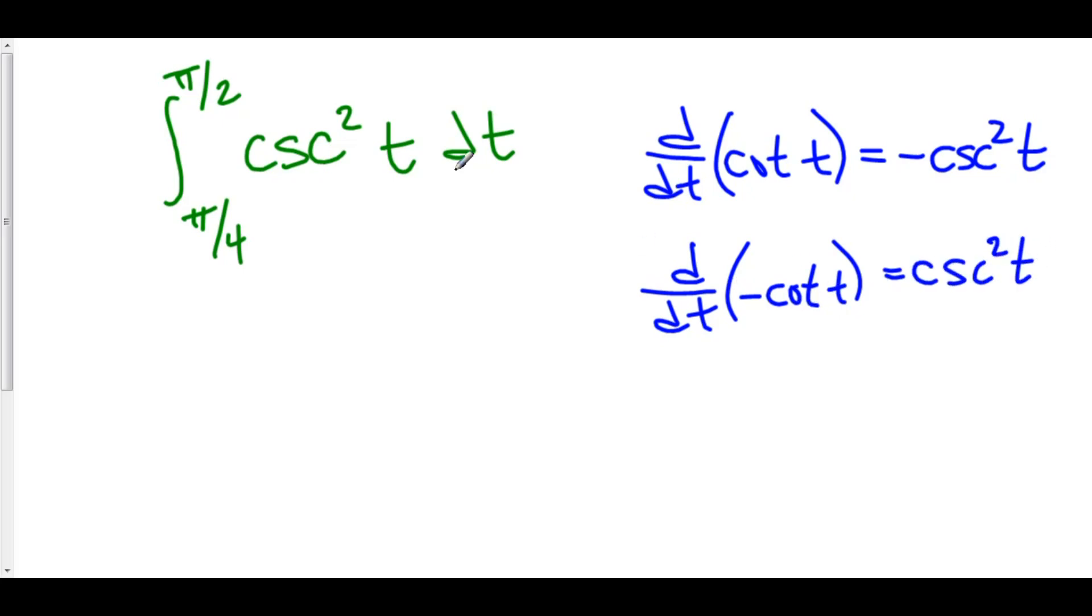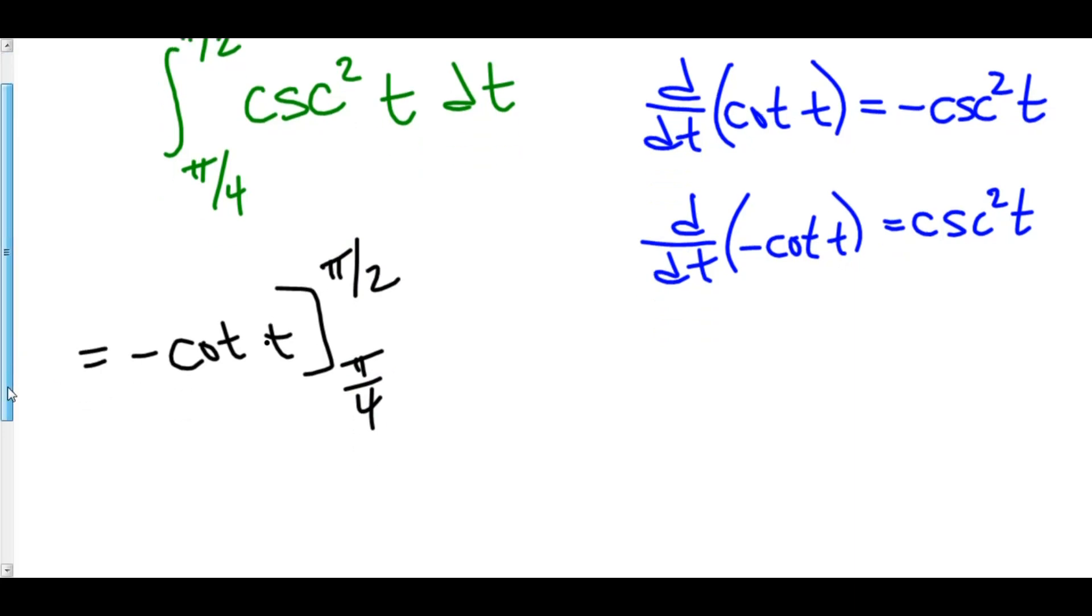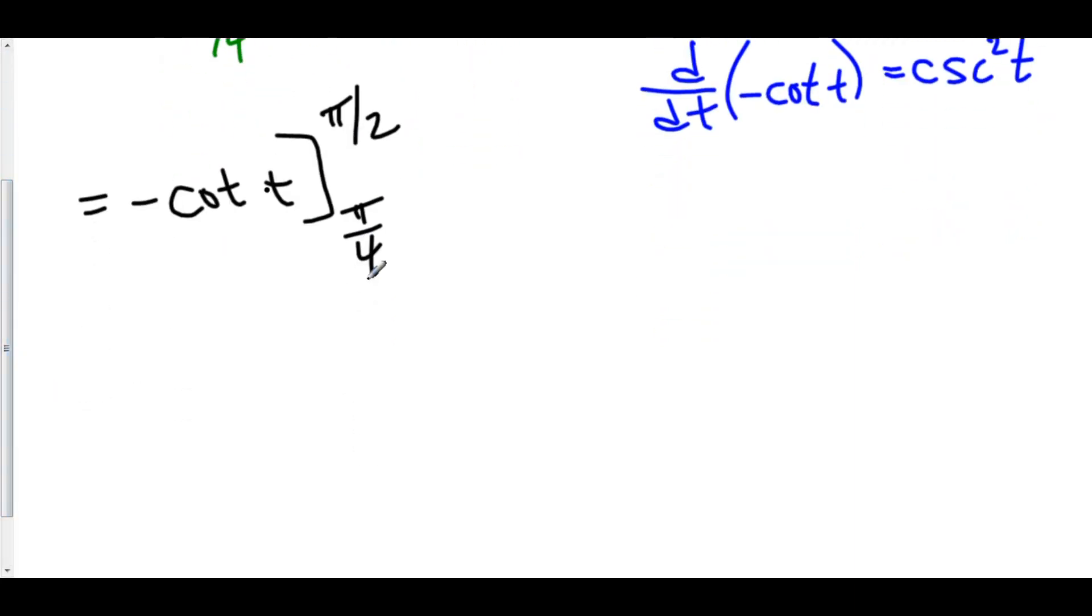So, the antiderivative of cosecant squared t is indeed negative cotangent t. So, we've got negative cotangent t from π/4 to π/2. Now whenever I plug in my b and my a using the fundamental theorem of calculus part 2, I don't like having constants in front of my function. So, I'm going to take that constant out just to make everything a little bit easier in terms of arithmetic.